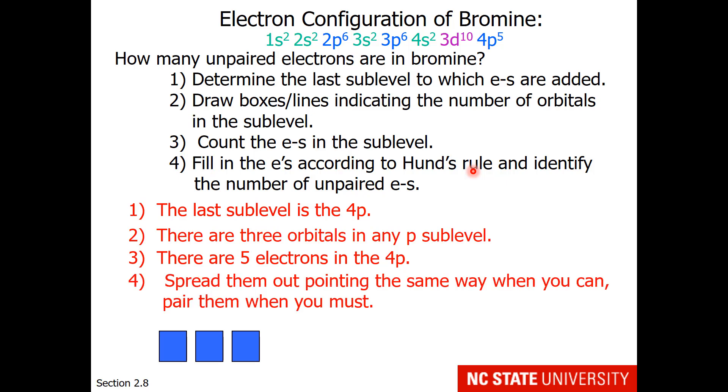When we're done with that, we can identify the number of unpaired electrons. So here we go. 1, 2, 3, 4, 5. There is 1 unpaired electron. Now for this example, you would get the same answer if you did it the wrong way. If you went 1, 2, 3, 4, 5. But there are other examples where doing it the incorrect way is going to give you the incorrect answer.